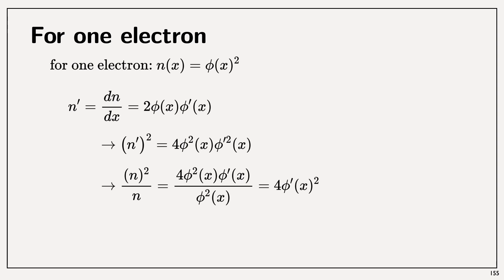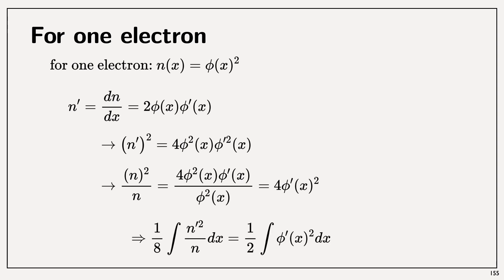If we integrate n′² over n and divide by 8, this is the same as one half of the integral of ψ′(x)² dx, which is obviously the kinetic energy of the single electron. So for the single electron, the functional (1/8)∫(n′²/n)dx — which is called the von Weizsäcker functional — is exact for the kinetic energy.